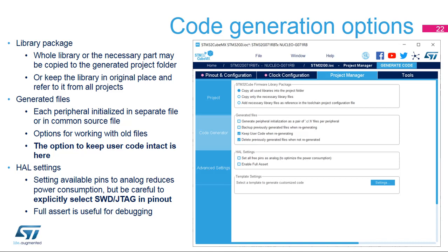Keeping the library in the original location makes it easier to share the latest version of the library among several projects. It can also generate the initialization code for all peripherals together in the STM32F-XXX_HAL_MSP.c file, or generate one file per peripheral. Options to backup or delete old files are a matter of the preferred workflow. Keep in mind that the options are tied to the regeneration function. This is also where the 'keep user code when regenerating' option is enabled. The 'set all free pins as analog' setting helps lower power consumption, but if the SWD/JTAG interface is not specifically selected in the pinout tab, this option will disable the debug interface.